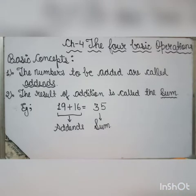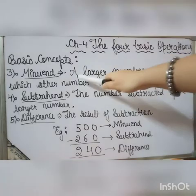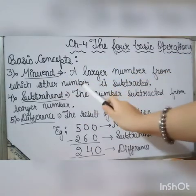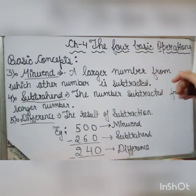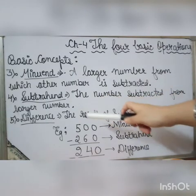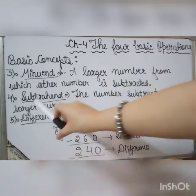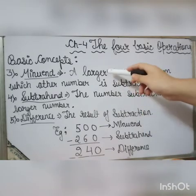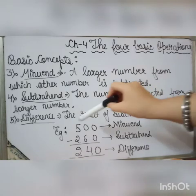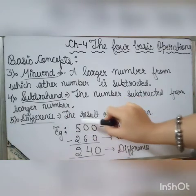The third basic concept is minuend. The minuend is the larger number from which another number is subtracted. The fourth concept is subtrahend — the number subtracted from the larger number. The fifth concept is difference — the result of subtraction.